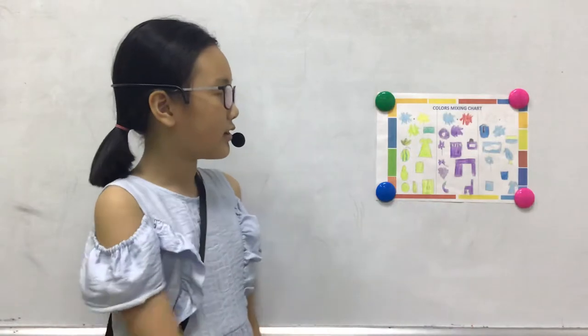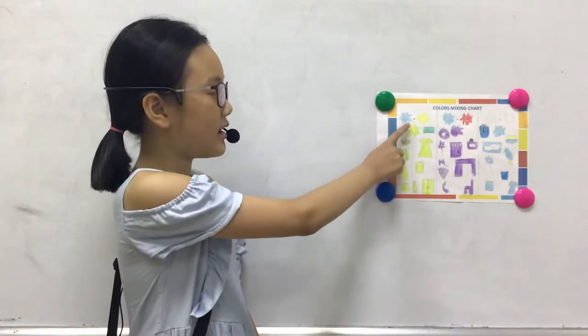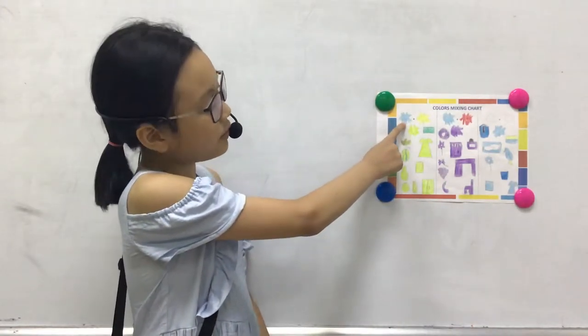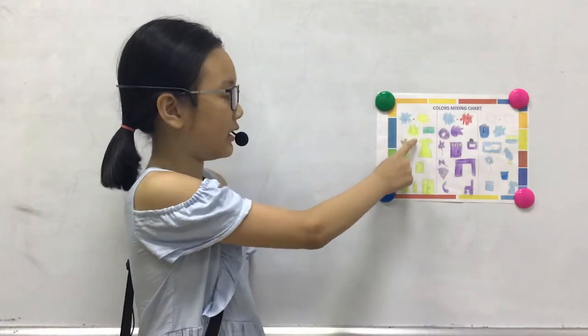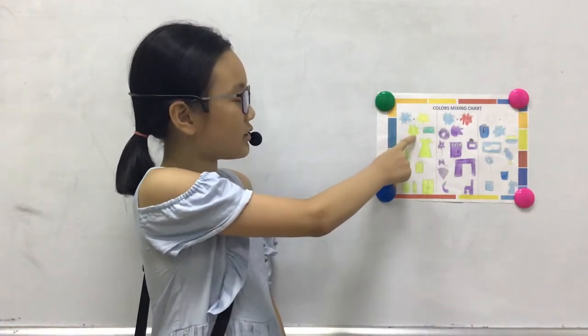My first color is green. Green is a secondary color. I mix blue and yellow to make green. Green is a cool color.